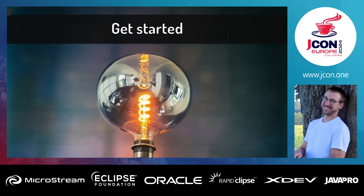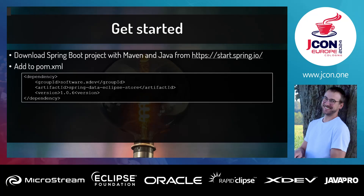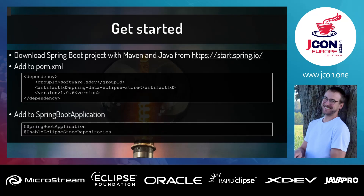Developers should be able to use our Spring Data Eclipse Store module like any Spring Data module — there shouldn't be a lot of rethinking or refactoring. Let me show you how easy it is to get started with SDES. First, download the Spring Boot project with Maven and Java from start.spring.io — the Spring Initializer. Then add this simple dependency into the POM. Version 1.0.0.6 is the newest version. Then simply add the @EnableEclipseStoreRepositories annotation to your Spring Boot application.